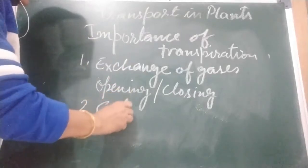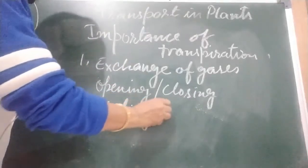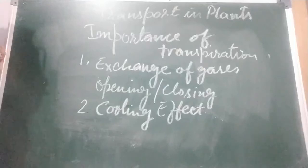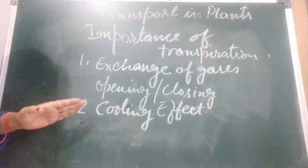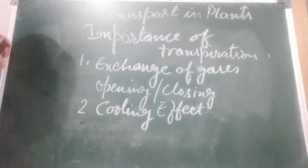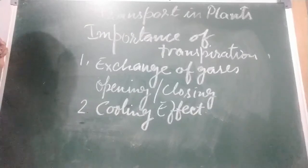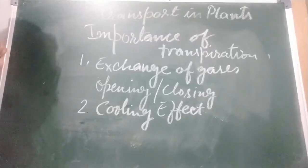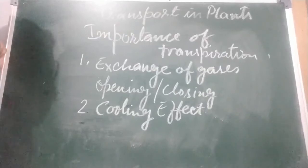Second importance: cooling effect. Water vapour goes out during transpiration and keeps the environment cool. When there are more trees around you, that place is cooler. Evaporation of water vapour brings down the surface temperature of the plant, thereby cooling it. Transpiration provides a significant cooling effect that also helps prevent damage to plant cells due to overheating.